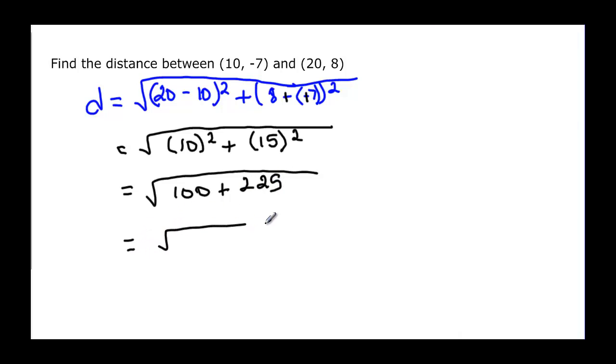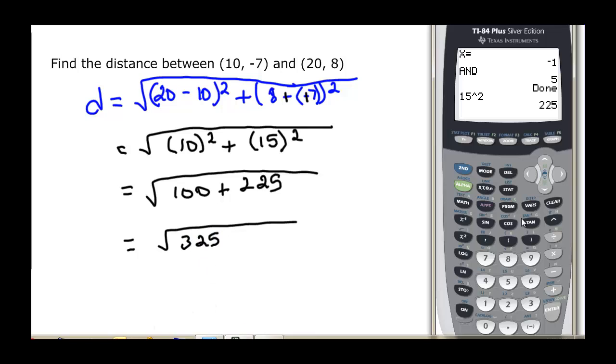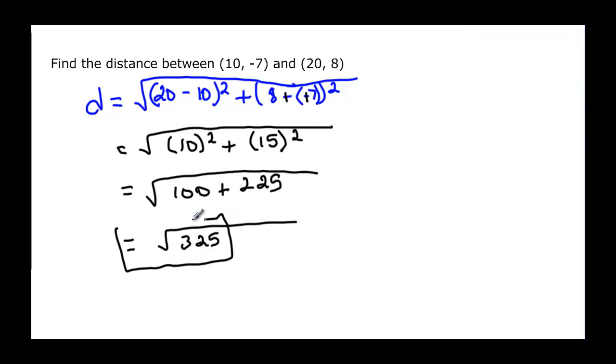And if I add those I get 325 which I do not believe is a perfect square but again we could double check that. Second x squared 325, if it ends up a decimal then we know it wasn't a perfect square. So we are left with the square root of 325.